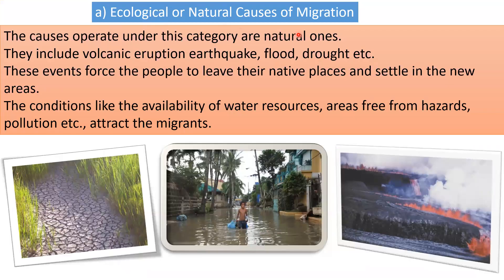Ecological or natural causes operate under natural conditions. They include volcanic eruption, earthquake, floods, tsunami, drought, etc. These events force people to leave their native places and settle in new areas. Conditions like the availability of water resources, areas free from hazards (hazard meaning exposure to risk), and low pollution attract migrants.